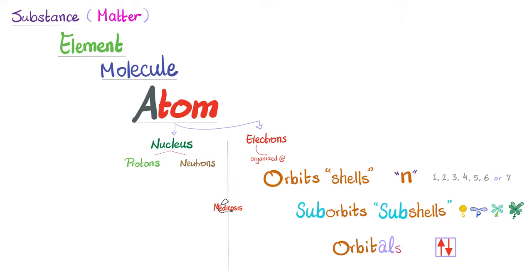Sub-orbits, or sub-shells, are the S sub-shell, P sub-shell, D sub-shell, and F sub-shell. And each orbital can carry a maximum number of two electrons.